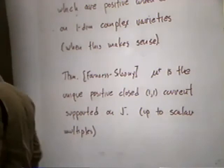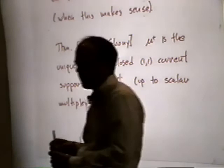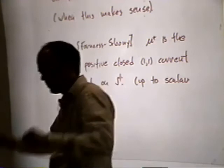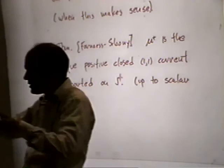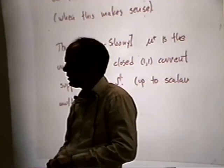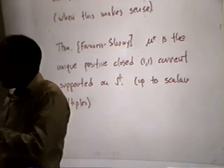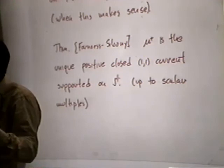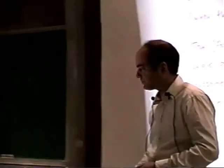If you look at the set J plus — the turbulation thought of as a set — then mu plus is the unique positive closed (1,1) current supported on J plus. Just as in the case of laminations, mu plus is determined completely by the set, not by the dynamics. It's determined by the underlying sets that are involved — this definition makes no reference to the diffeomorphism F at all. The positivity means it behaves well on complex submanifolds; the closedness is somehow related to the holonomy invariance.